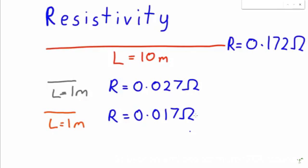So this is lower than the 0.027 for the aluminum wire. So now I can say that copper is a better conductor than aluminum.